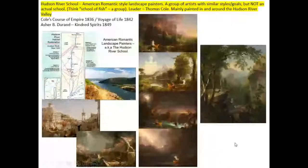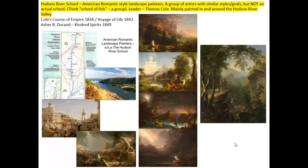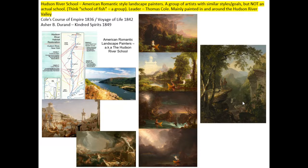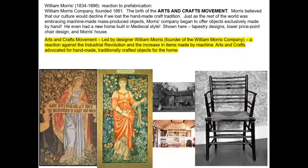The Hudson River School is an American Romantic landscape group of painters. 'School' here means a group of like-minded individuals, not a place of education — think 'school of fish' or 'school of thought.' The Hudson River School painters painted in and around New York's Hudson River Valley. Their leader was Thomas Cole, known for painting cycles such as The Course of Empire and The Voyage of Life. Another member painted an homage to Cole called Kindred Spirits, which also features the famous poet William Cullen Bryant.